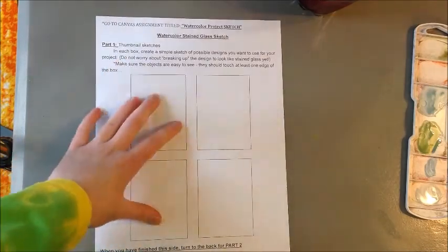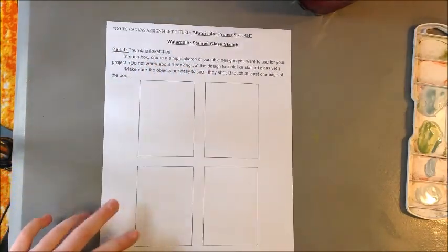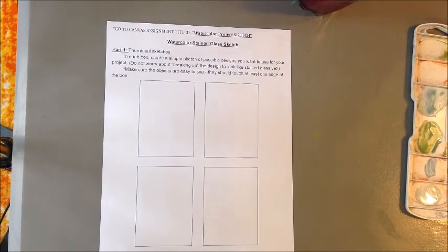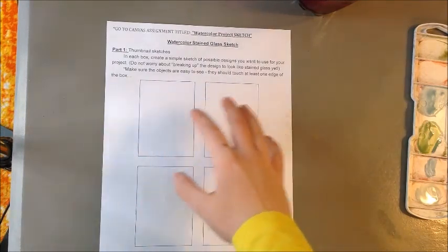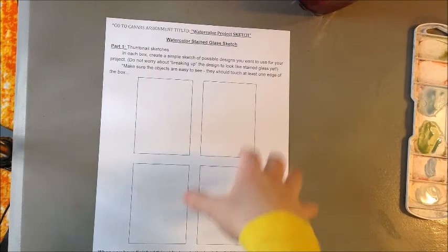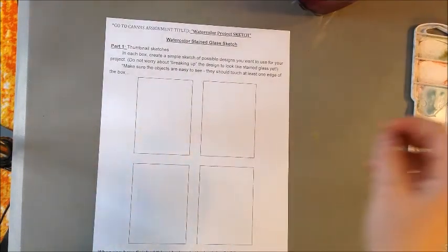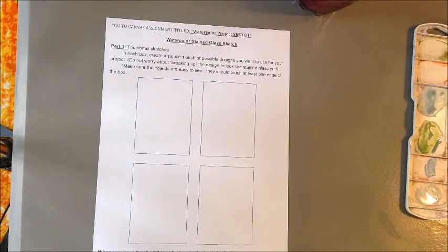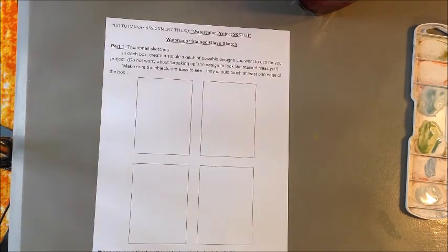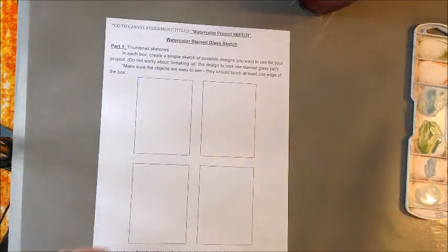So you have two parts. Part one is on one side, part two on the other. Part one, in each box create a simple sketch of possible designs you want to use for your project. So these could be like totally different pictures or kind of the same picture, just different compositions. We're just getting basic thumbnail sketches like just what composition do you want on your project. Make sure the objects are easy to see. They should touch at least one edge of the box.